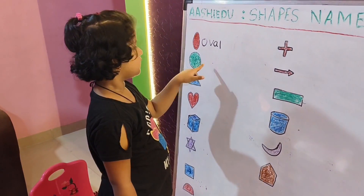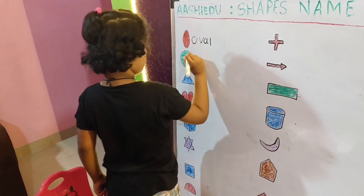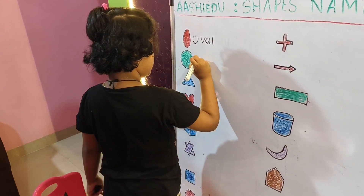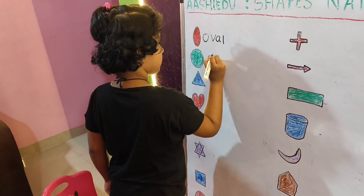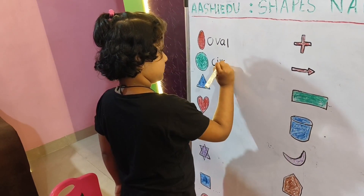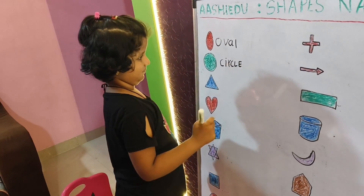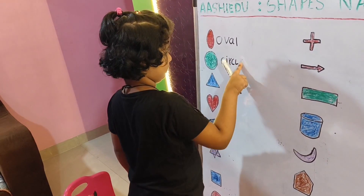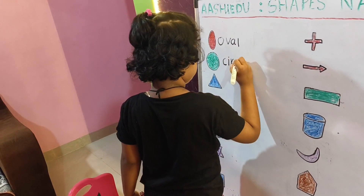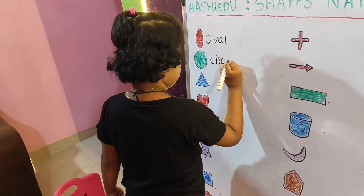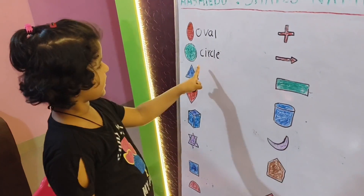Now, this is the circle, second. Circle. C-I-R-C-L-E. Please, small letter. Don't write capital letter or O. L also. Circle. Nice. This is the second.